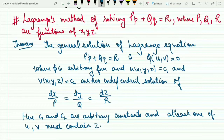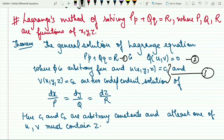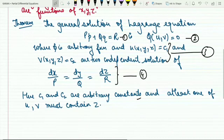The theorem states that the general solution of the Lagrange's equation — that is pp plus qq equals to R (equation 1) — is φ(u, v) = 0 (equation 2), where u(x, y, z) = c₁ and v(x, y, z) = c₂ (equation 3). Here φ is an arbitrary function and u and v are the two independent solutions of dx/P = dy/Q = dz/R (equation 4). Note that c₁ and c₂ are arbitrary constants and at least one of u, v must contain z.